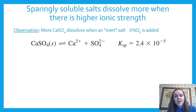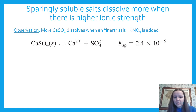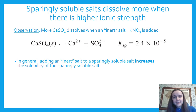Here's another example. These sparingly soluble salts with Ksp: calcium sulfate only dissolves a little bit, it has a pretty low Ksp of 2.4 × 10⁻⁵. More calcium sulfate is going to dissolve when the inert salt potassium nitrate is added. In general, adding inert salts increases the solubility of sparingly soluble salts like calcium sulfate.